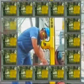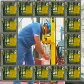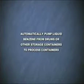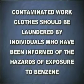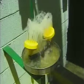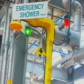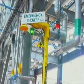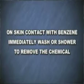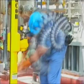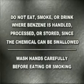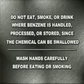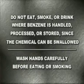Wear protective work clothing. Wash thoroughly immediately after exposure to benzene, before you eat or drink anything, and at the end of your work shift. Where possible, automatically pump liquid benzene from drums or other storage containers to process containers. Contaminated work clothes should be laundered by individuals informed of the hazards of exposure to benzene. Eyewash fountains should be provided in the immediate work area for emergency use, and if there is possibility of skin exposure, emergency shower facilities should be provided. Do not eat, smoke, or drink where benzene is handled, processed, or stored, since the chemical can be swallowed. Wash hands carefully before eating or smoking.